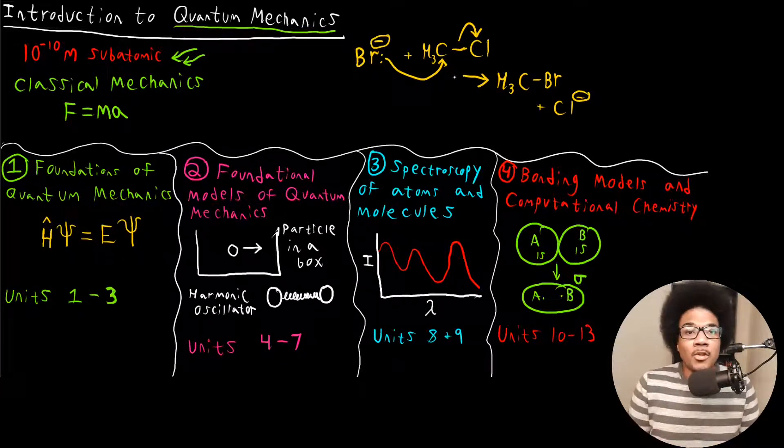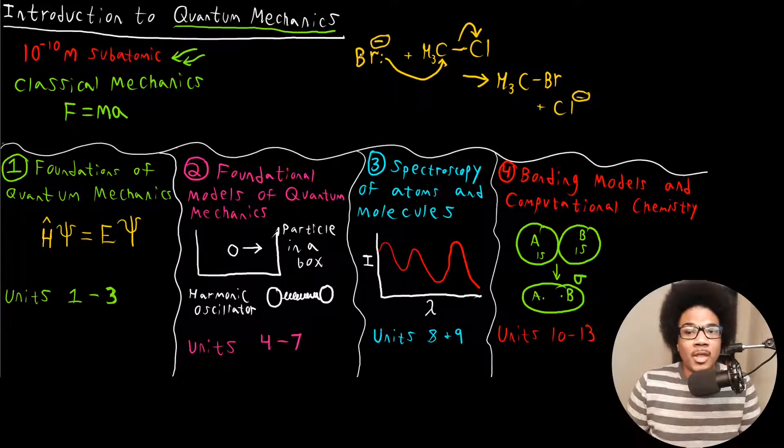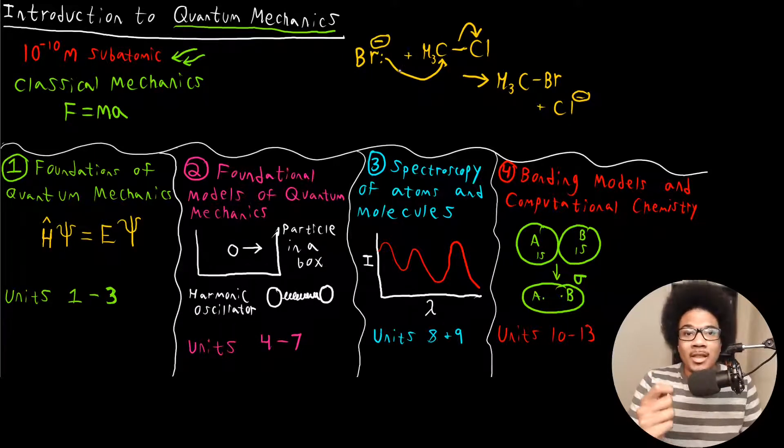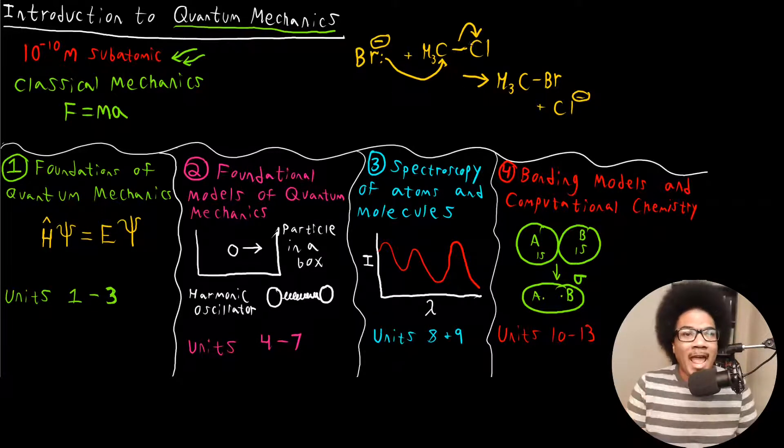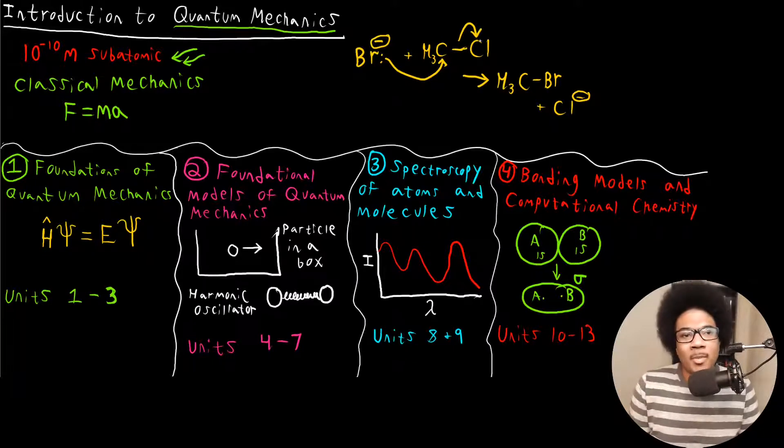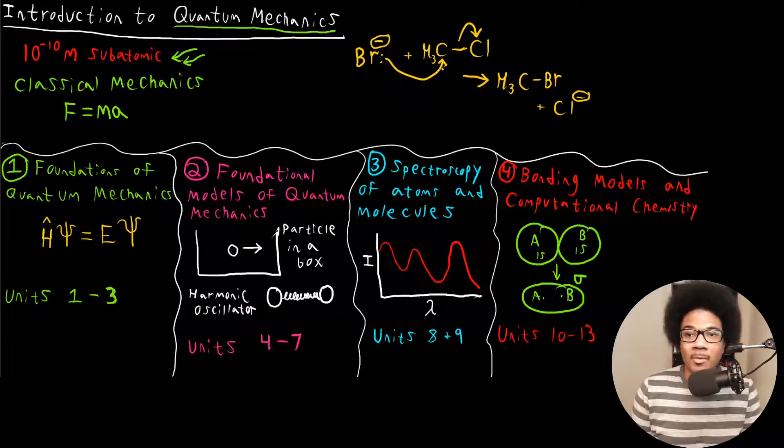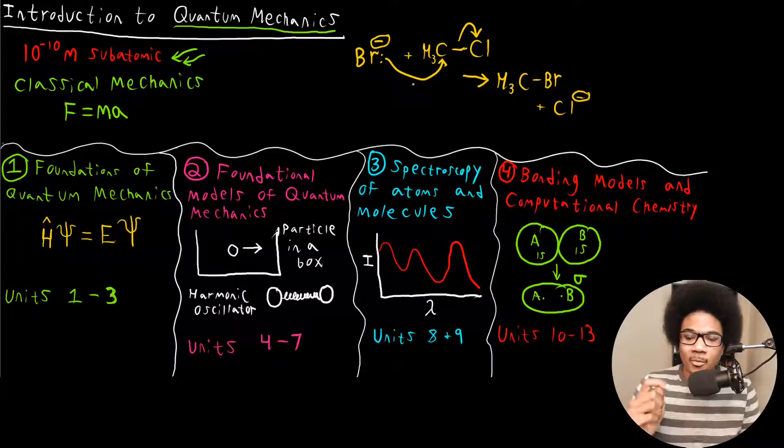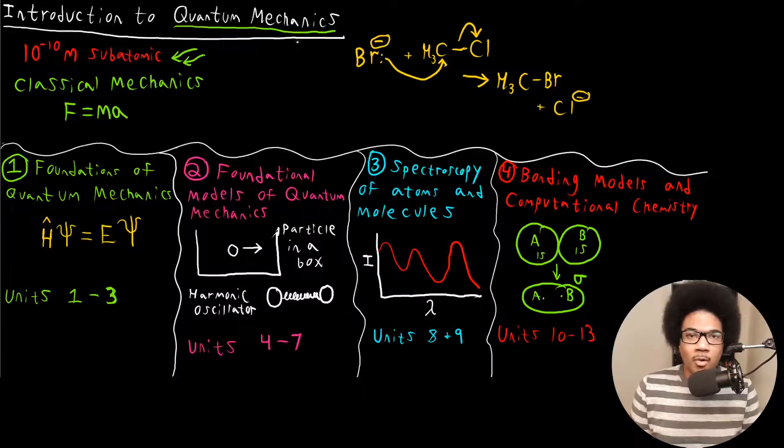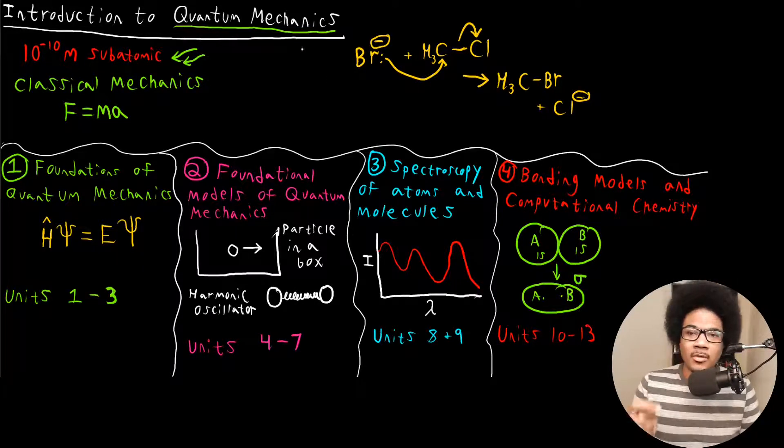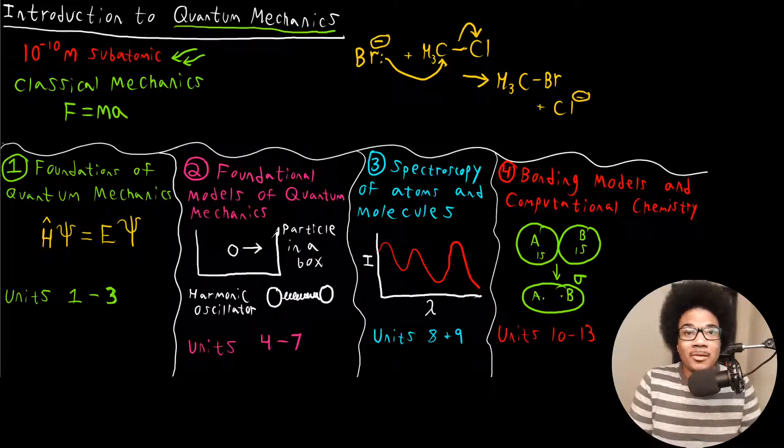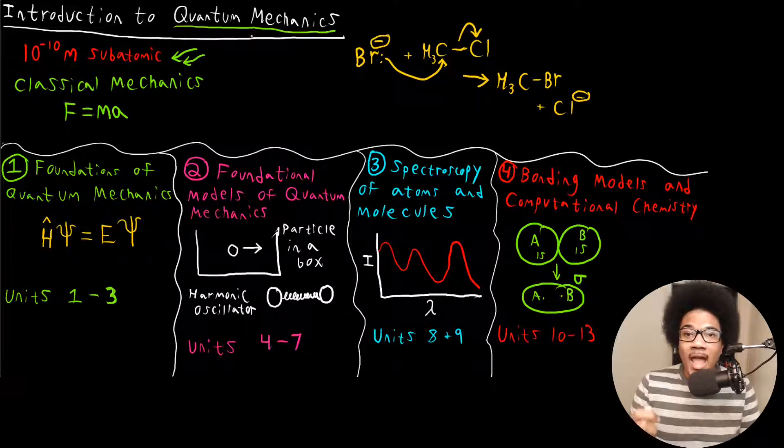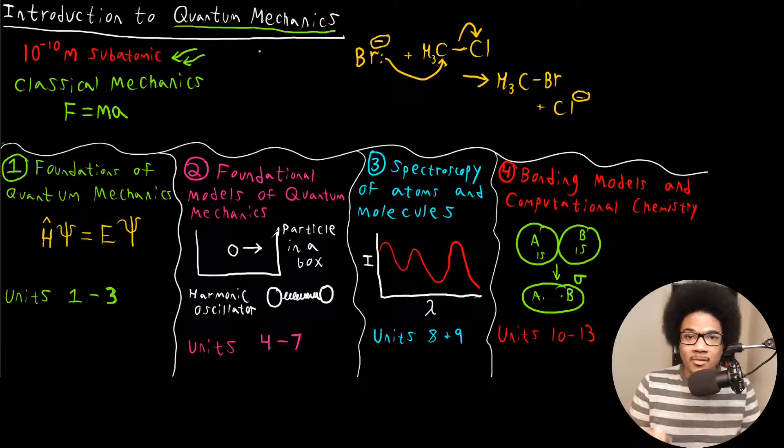And you really need quantum mechanics to be able to understand this on any deep level. So you're able to make it through organic chemistry just fine, knowing how to push arrows, knowing what's going to happen. You have a lot of predictive power with this type of notation. But to really understand it on a deep level, that's where quantum mechanics comes in. So that you understand the energies, the motion of electrons and atoms and molecules that can only be accurately described by this new physics.